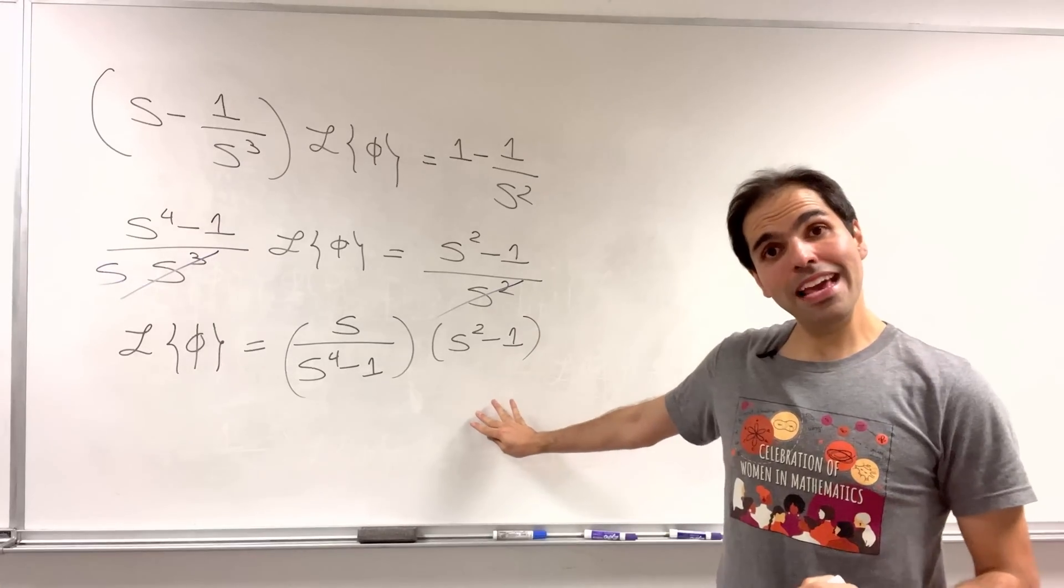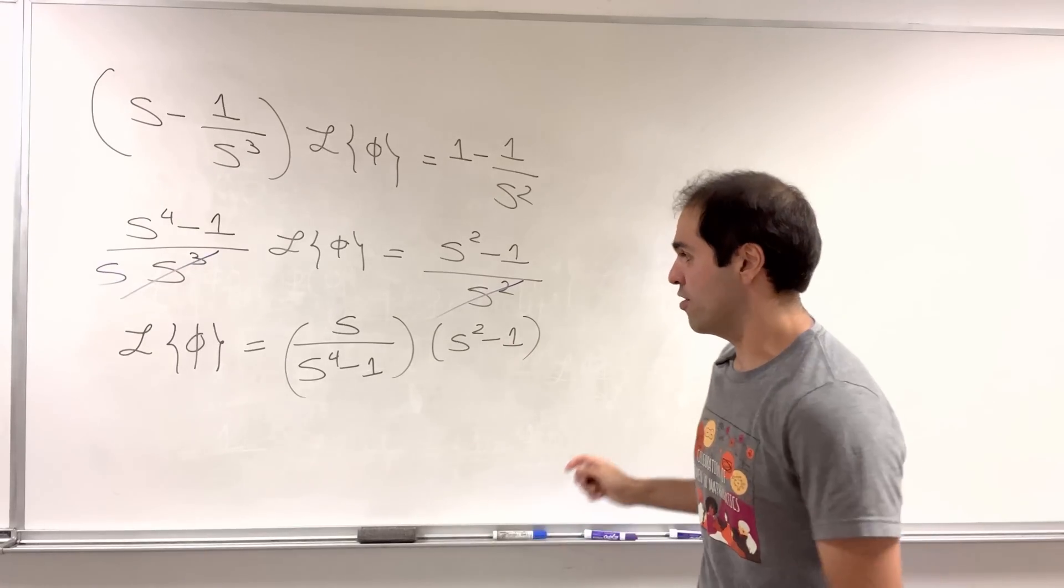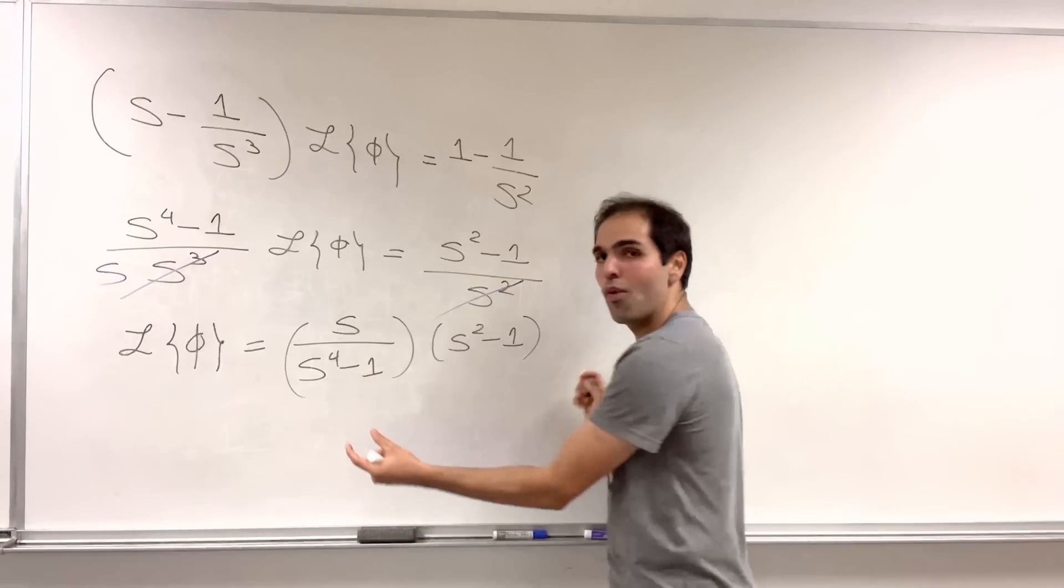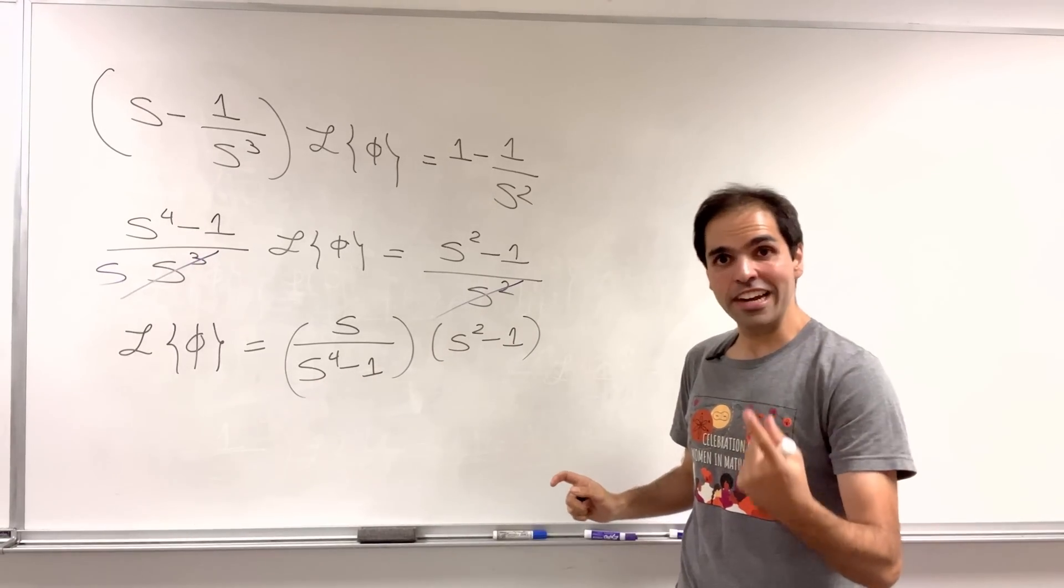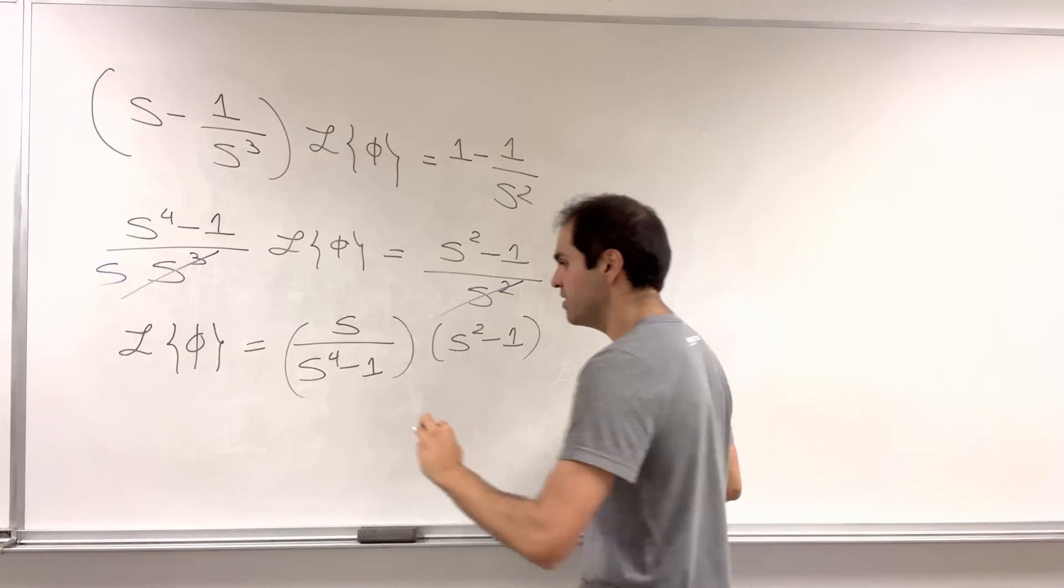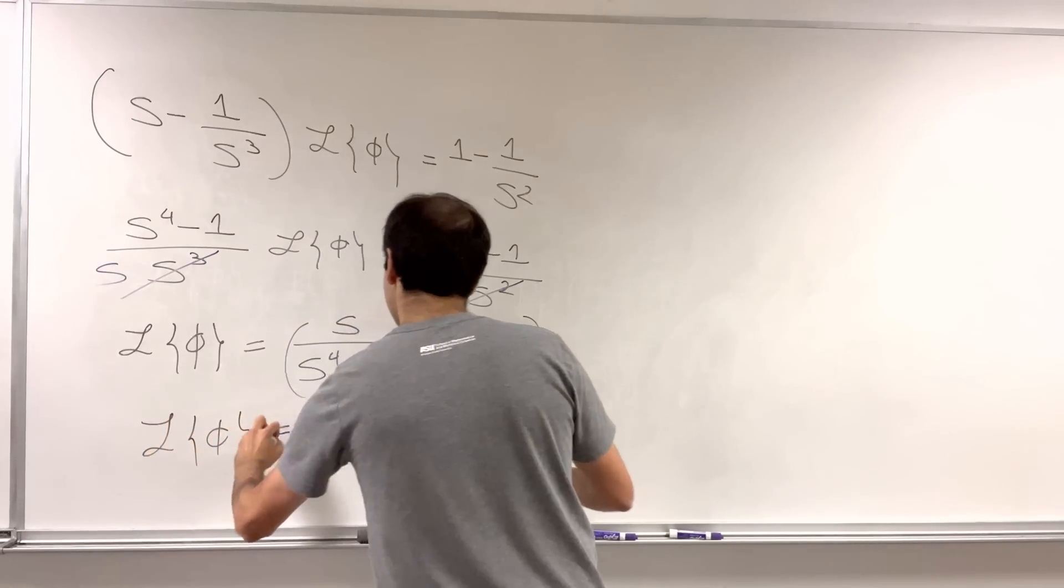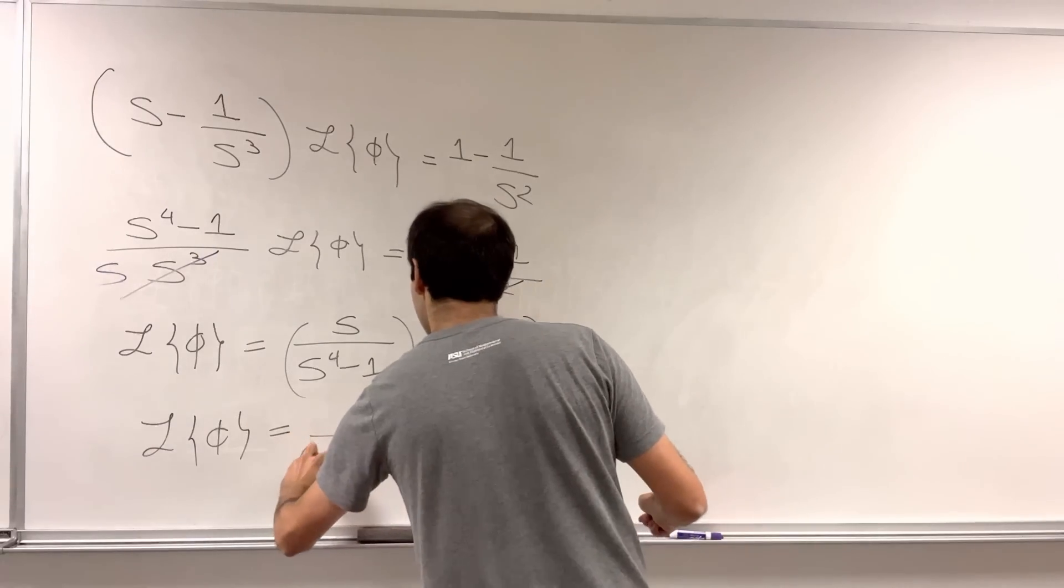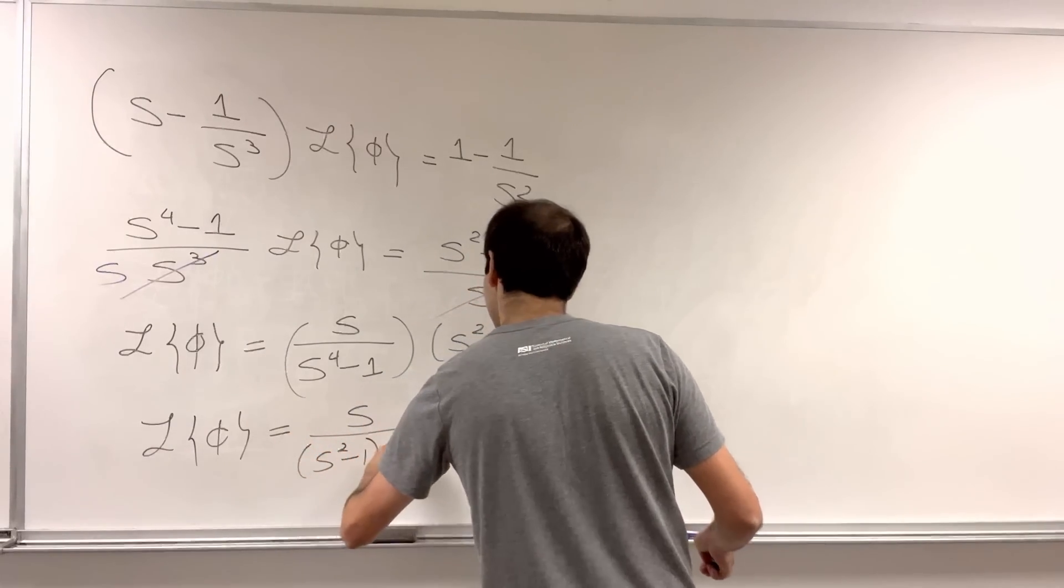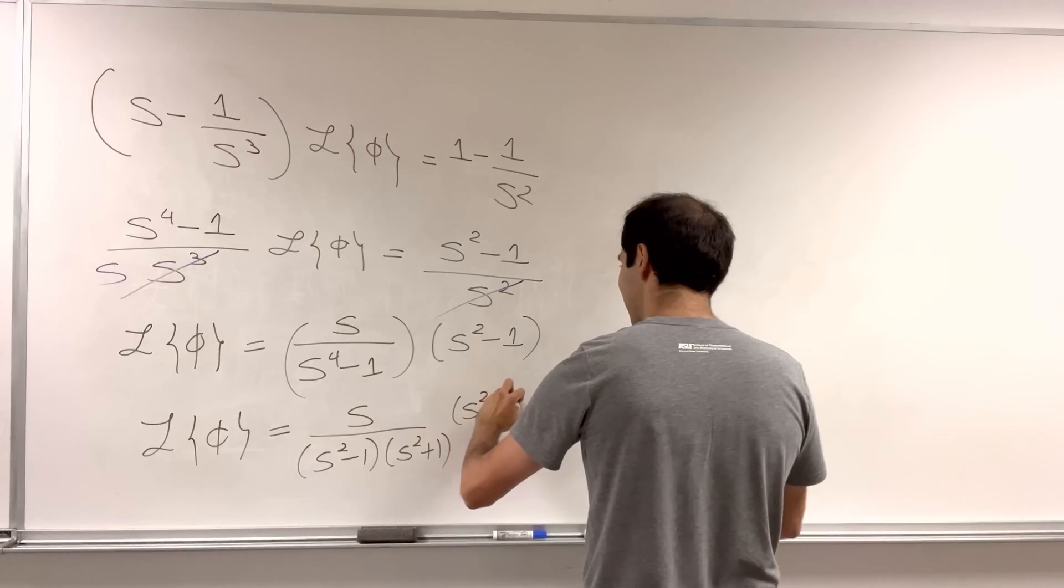But the amazing thing is, this can be simplified even further, because s to the fourth is s squared squared, one is one squared, so you just use a squared minus b squared, and we end up getting that L of phi is s over s squared minus one, times s squared plus one, times s squared minus one.